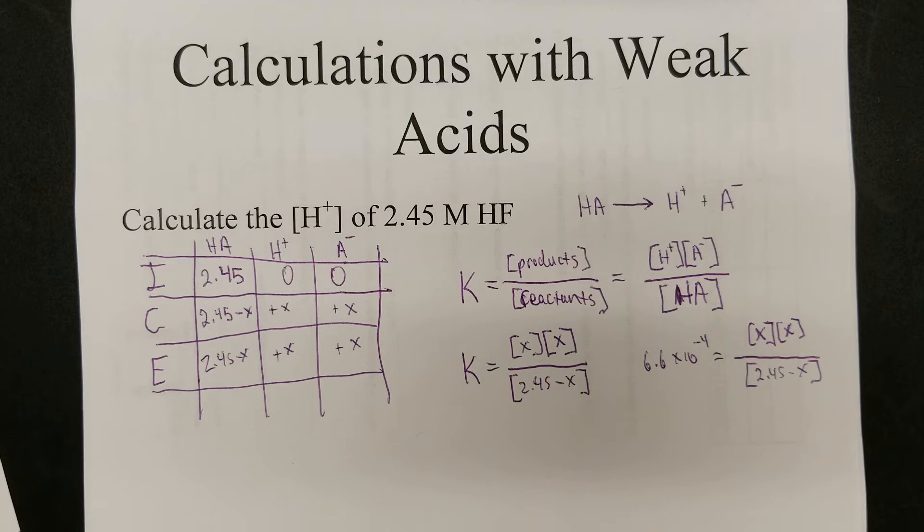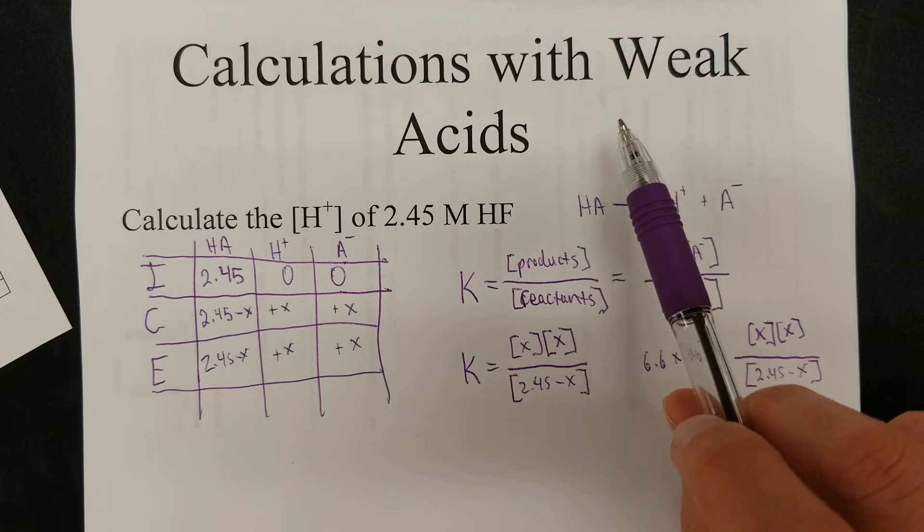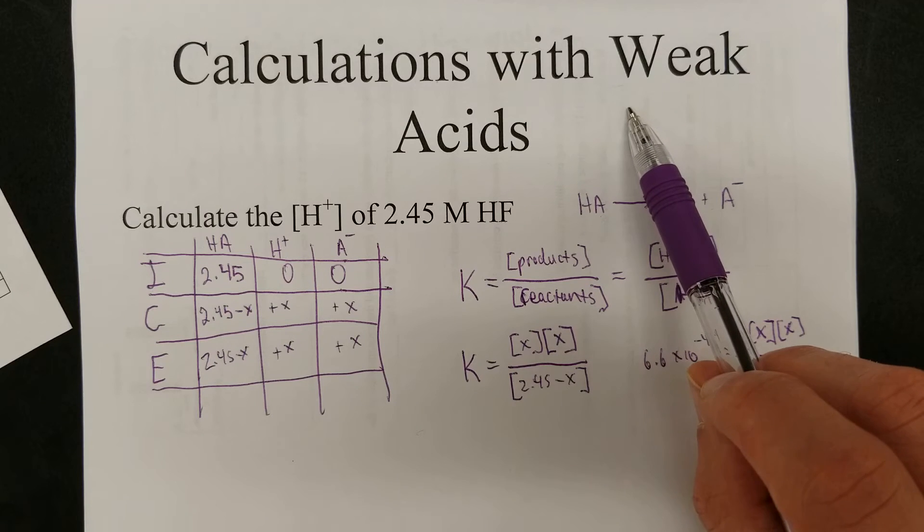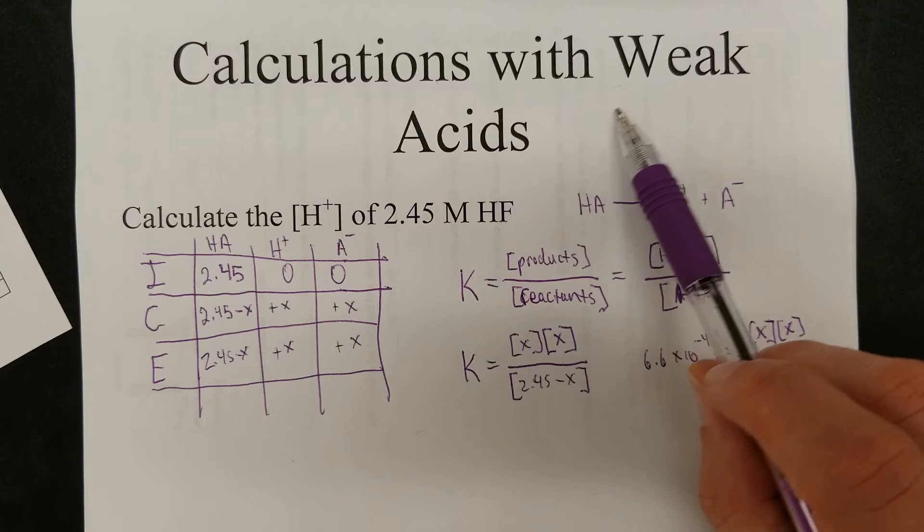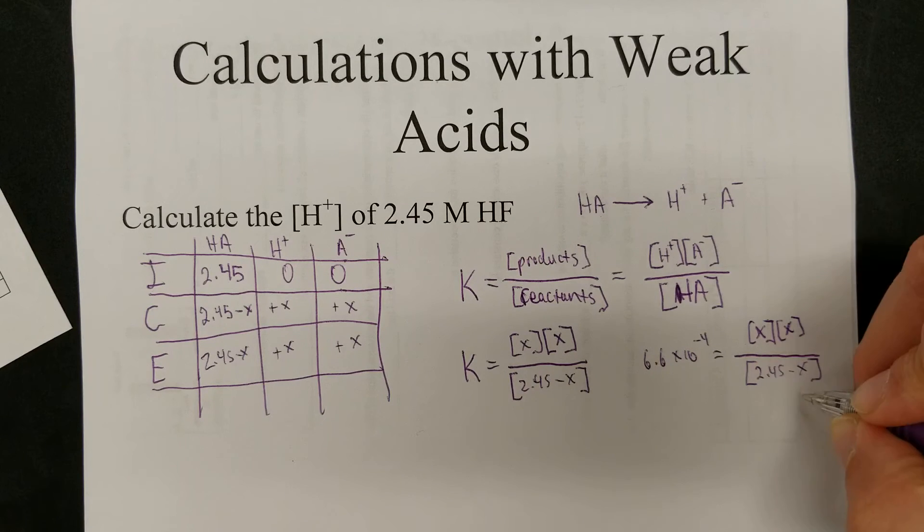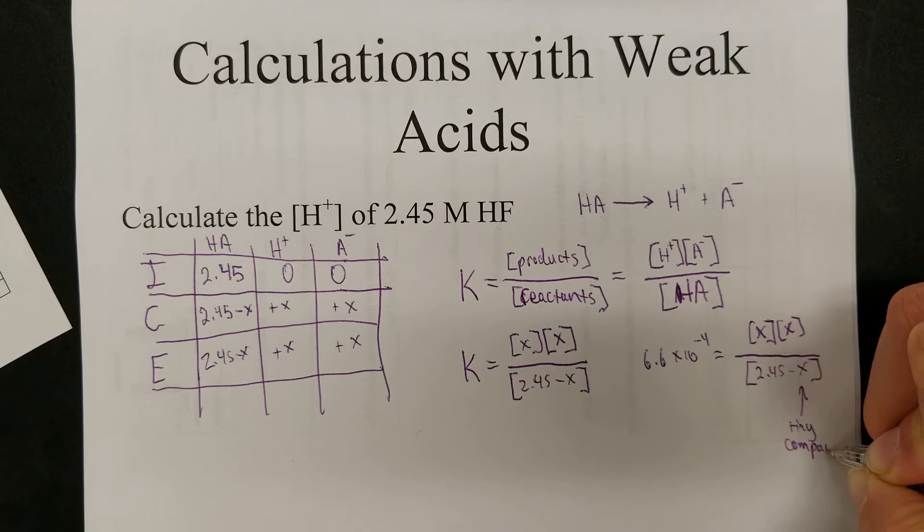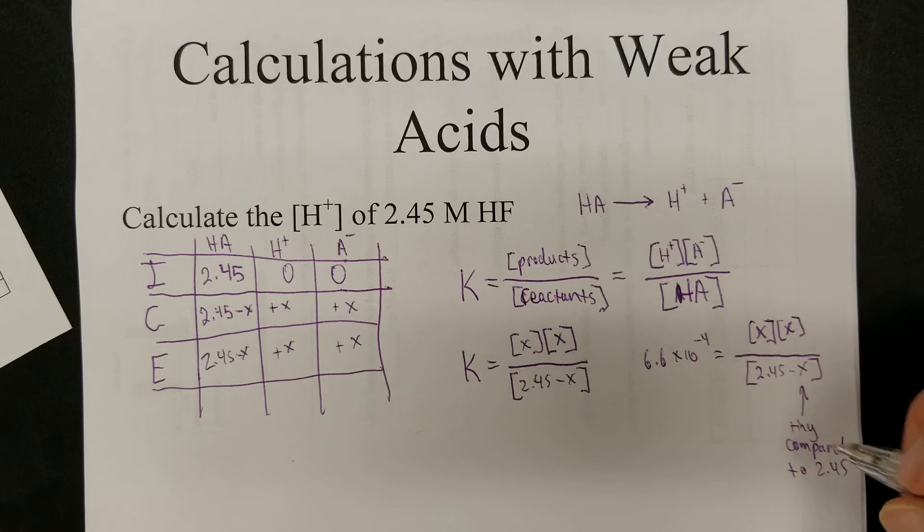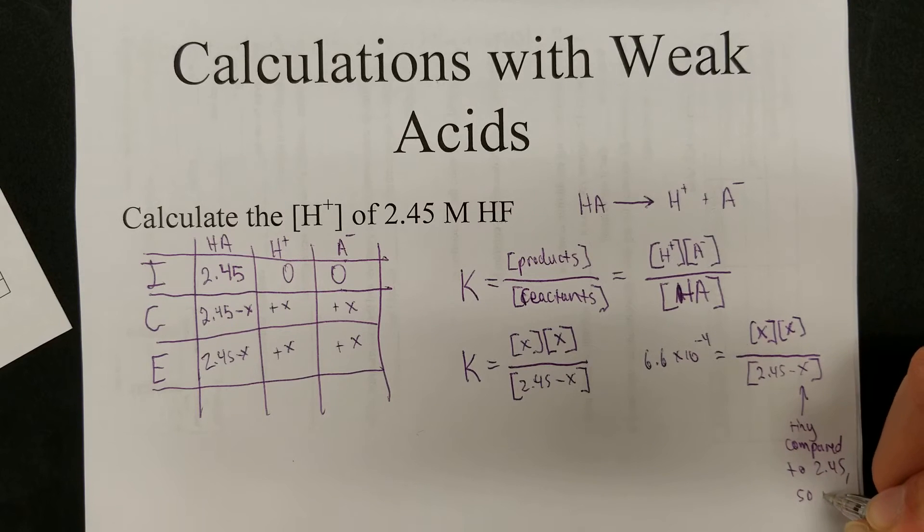So, let's combine things and kind of make things a little simpler. Weak acids, we assume that they dissociate very little. Oftentimes, it's usually just one molecule out of a thousand will dissociate. So, we're going to say this number is tiny compared to whatever this number is. In this case, 2.45. Therefore, so you ignore it.